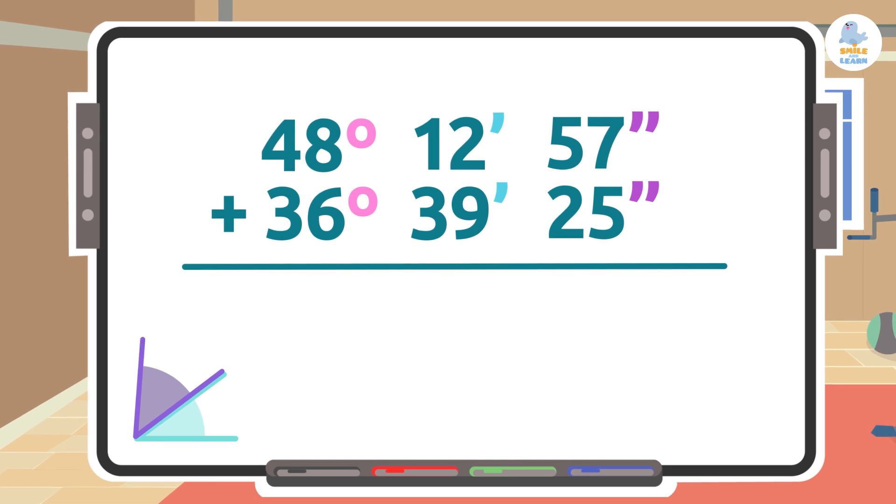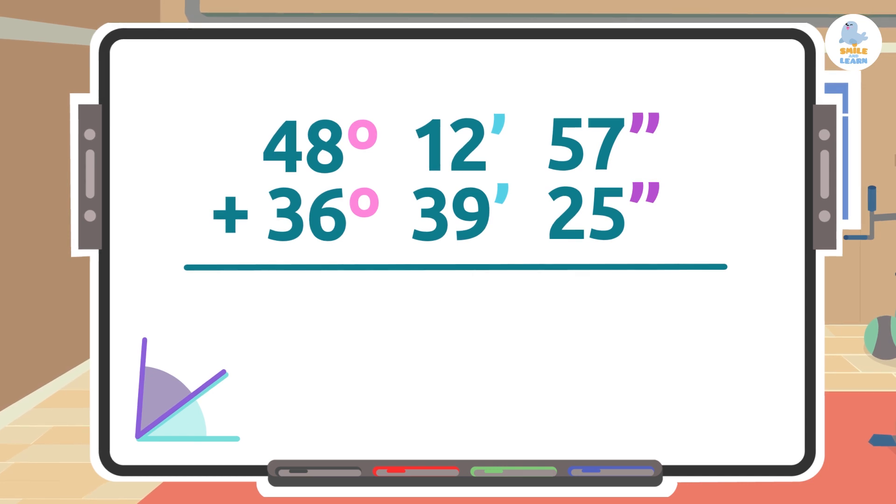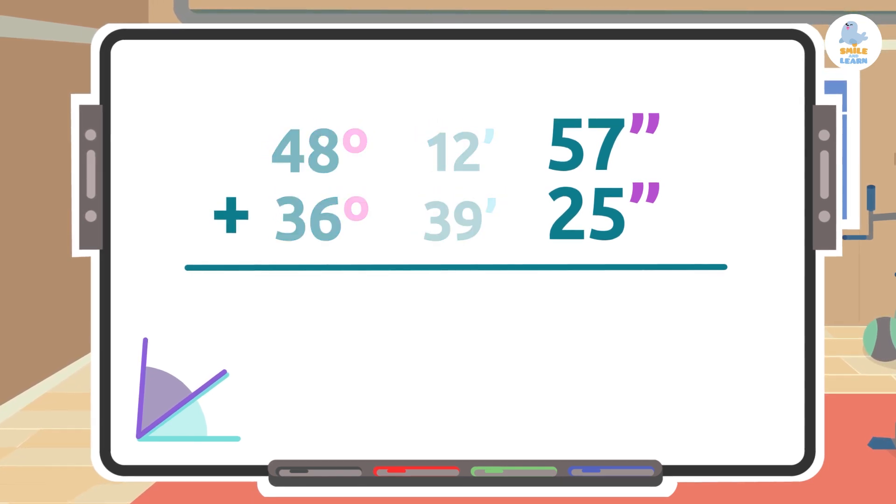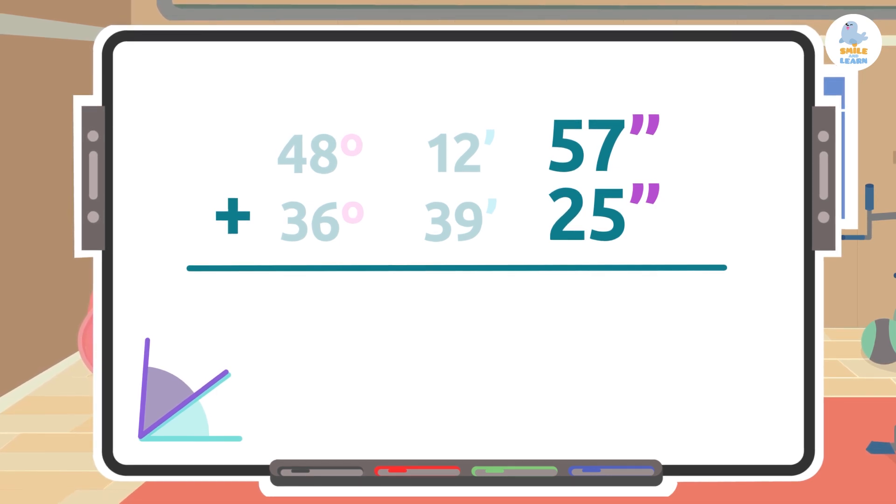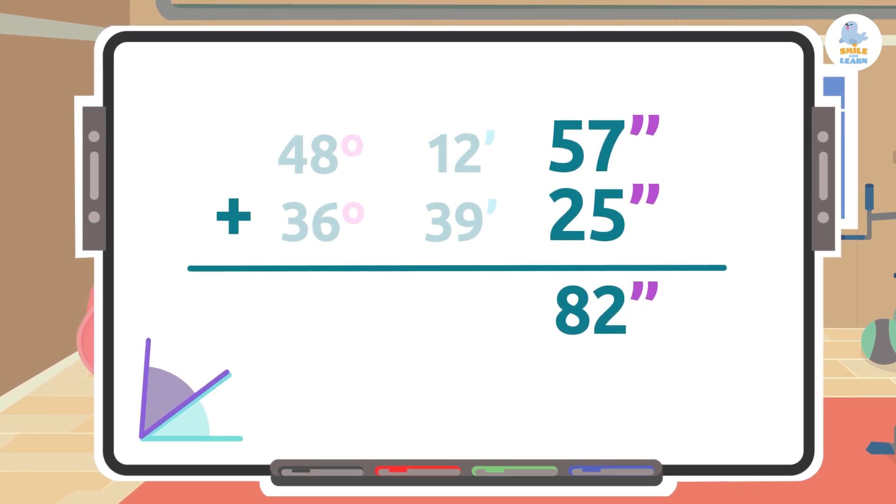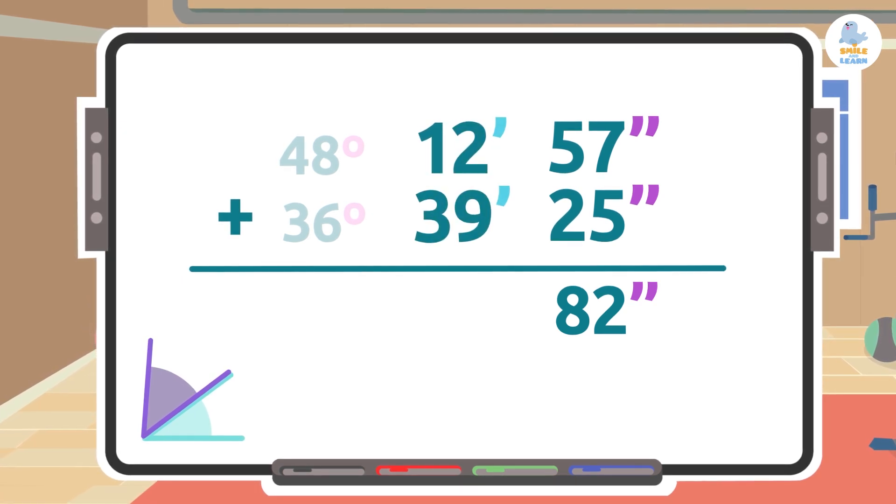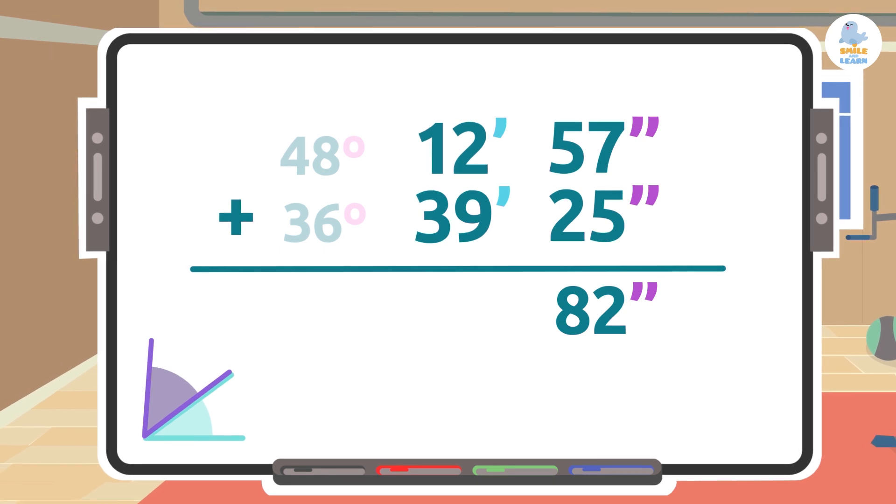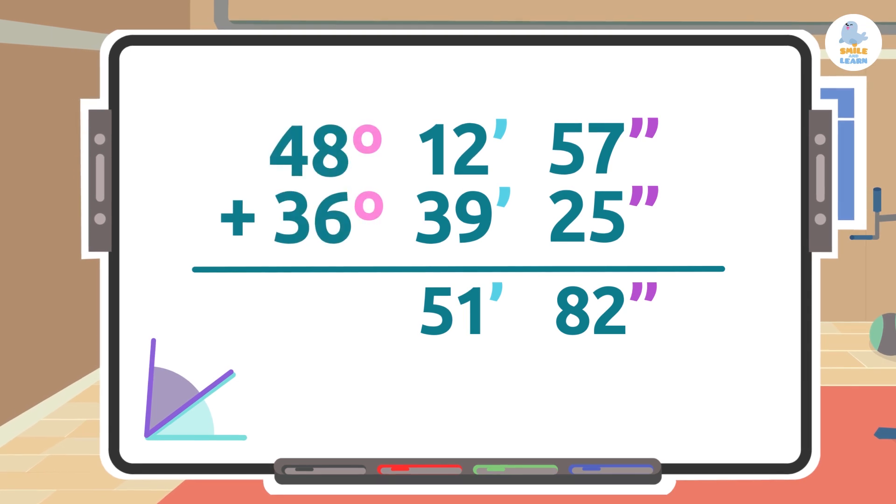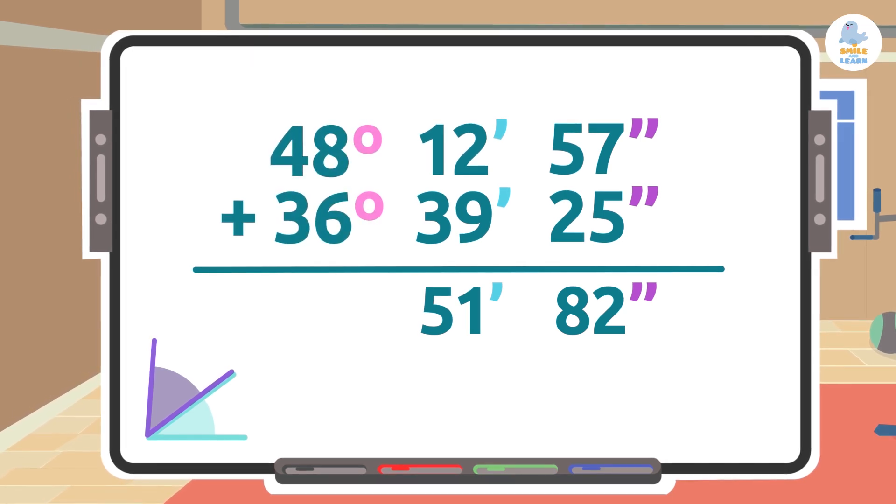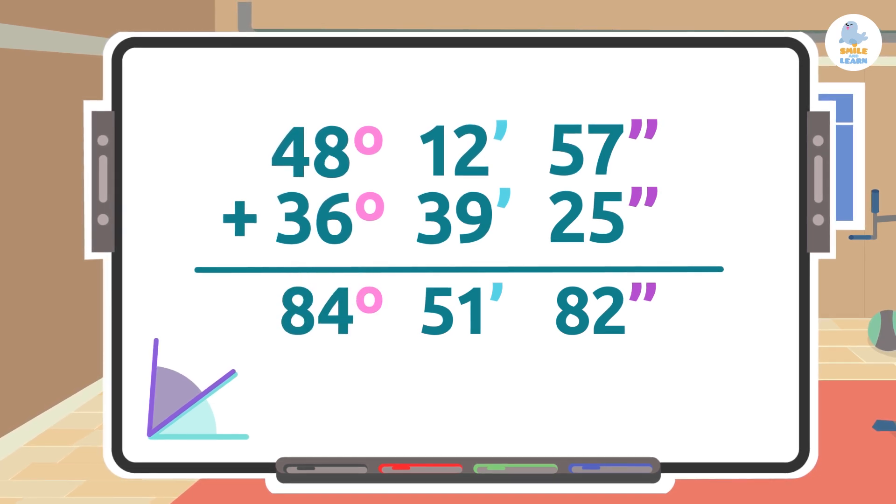Once we have placed the angles correctly, we have to add each column separately. We'll start by adding the seconds: 57 seconds plus 25 seconds is 82 seconds. Now we'll add the minutes: 12 minutes plus 39 minutes is 51 minutes. Lastly, we'll add the degrees: 48 degrees plus 36 degrees is 84 degrees.